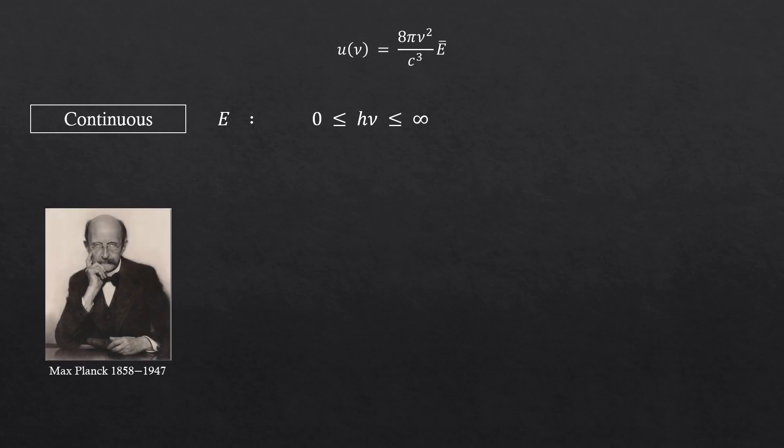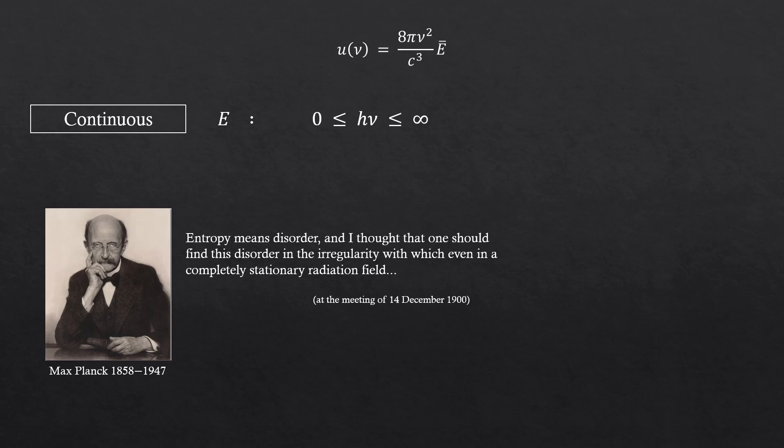The problem is the energy being considered as a continuous variable. Max Planck proposed an interesting idea in 1900. Let me read this. Entropy means disorder. And I thought that one should find this disorder in the irregularity, with which even in a completely stationary radiation field. You see here, he says stationary radiation field. He's talking about the standing waves, that go with n-harmonics.